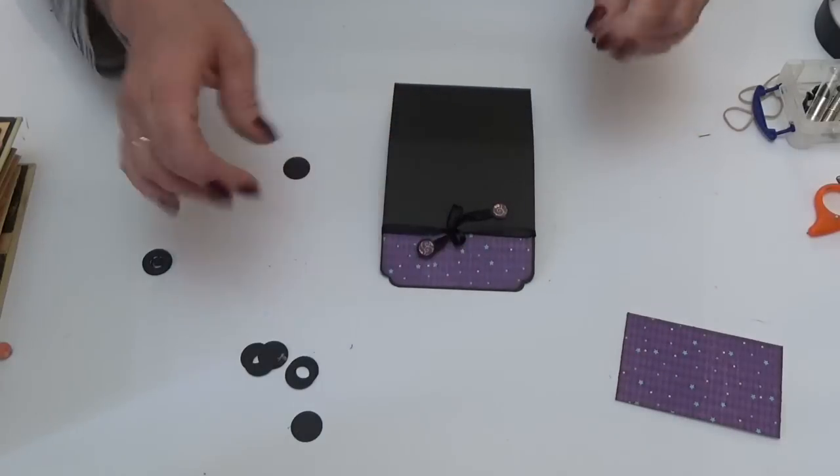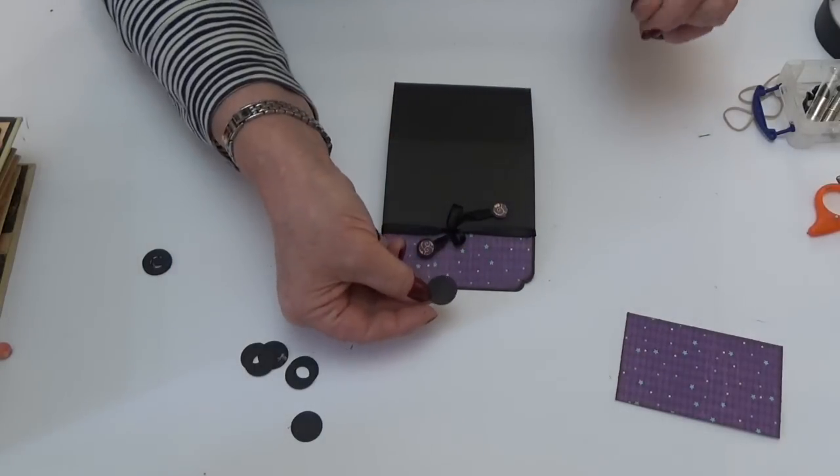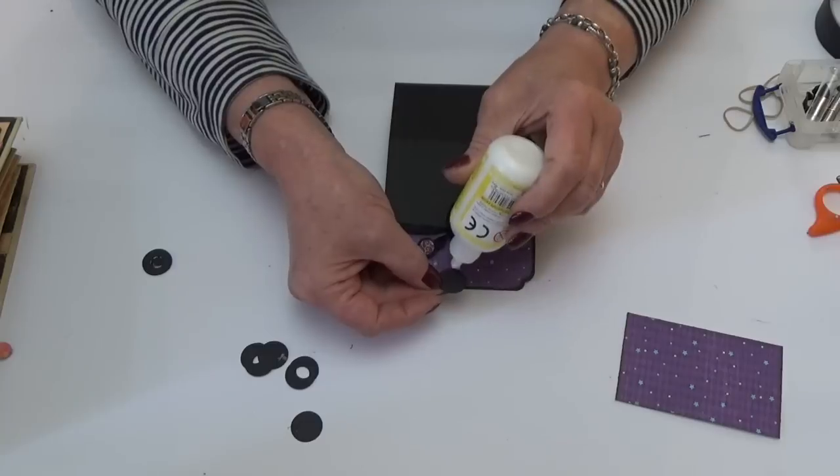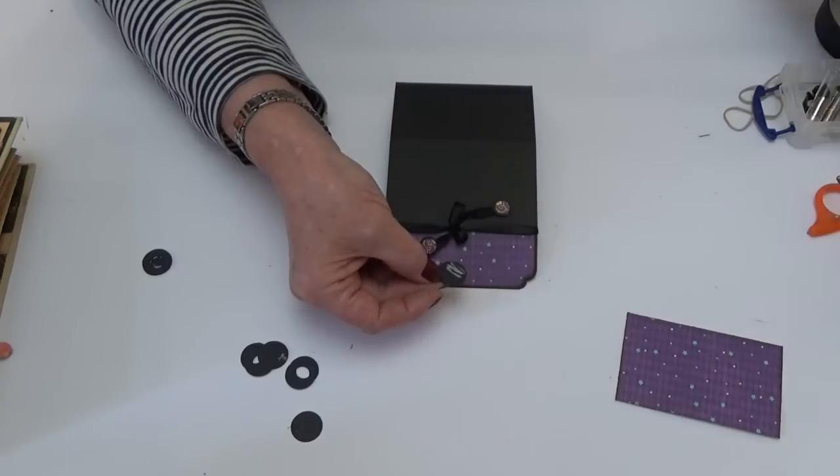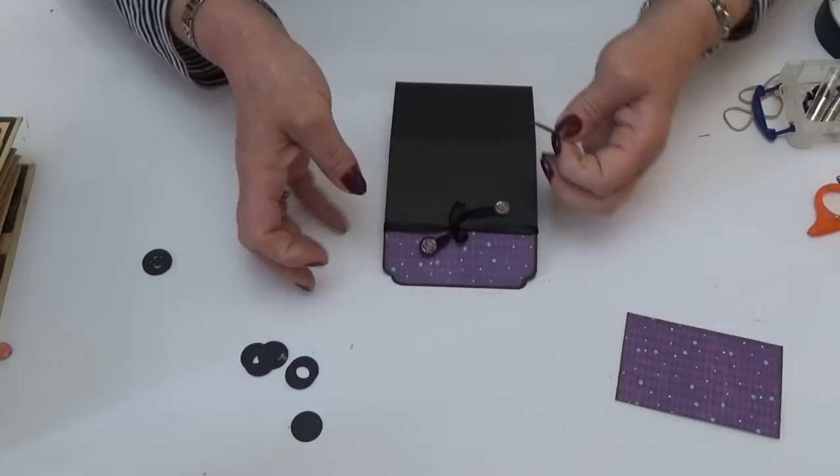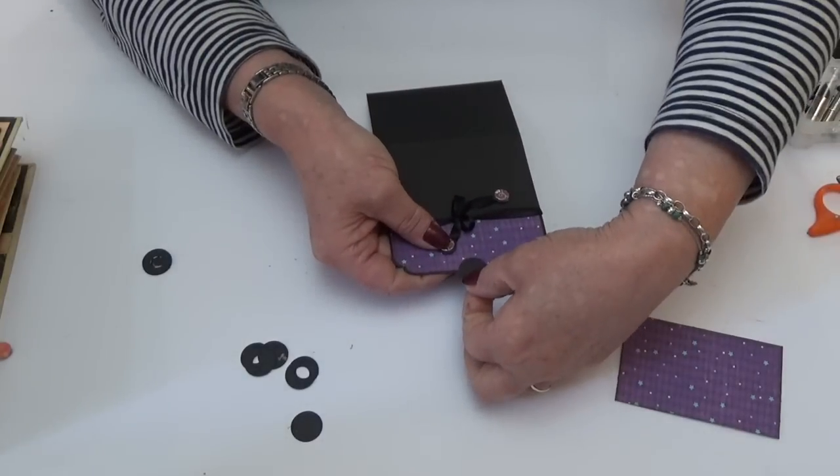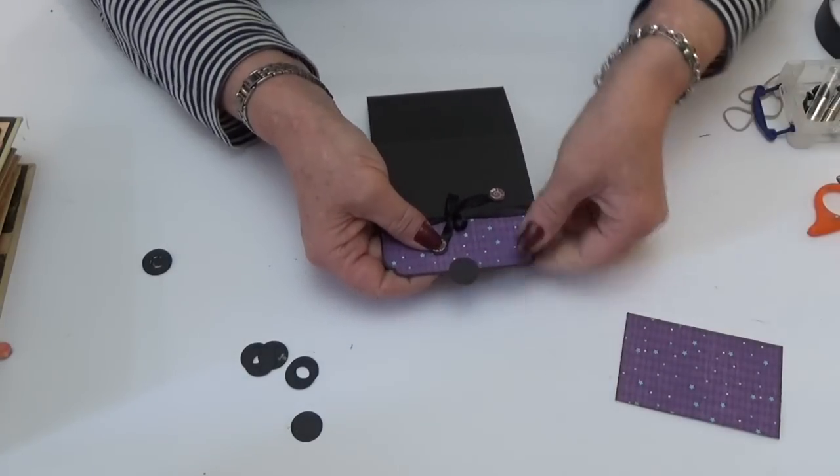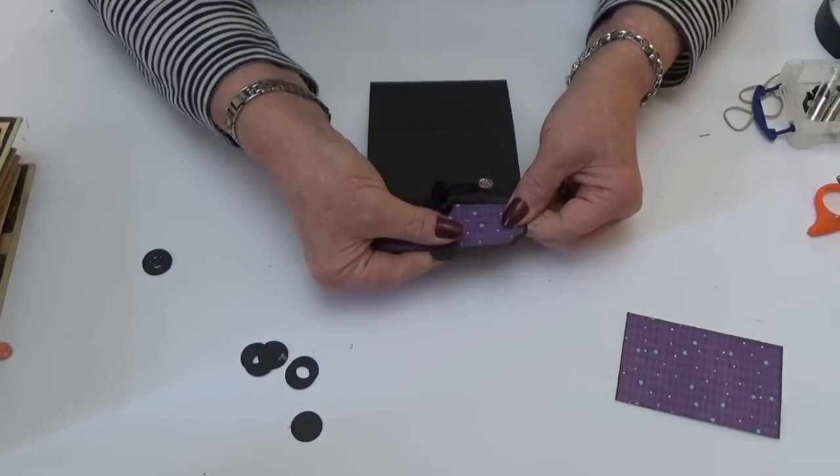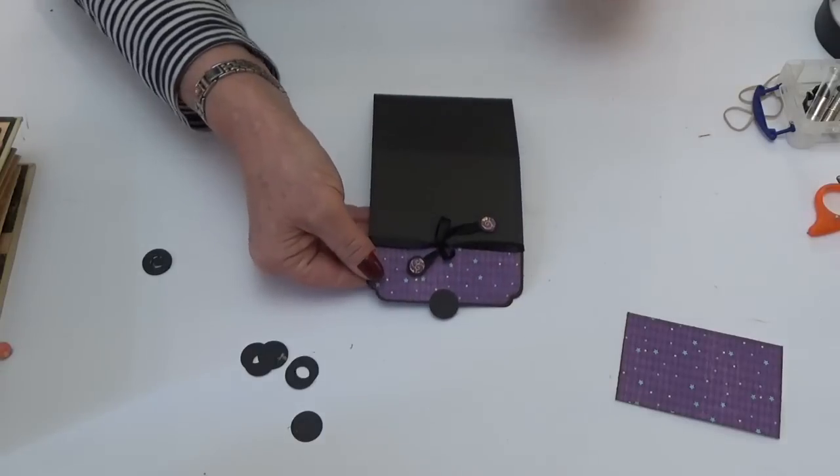And then onto that I'm going to stick one black circle, but I'm only going to stick it half on, half off, in the center so that it sticks out. So I'm just eyeballing the center, but you could measure yours.